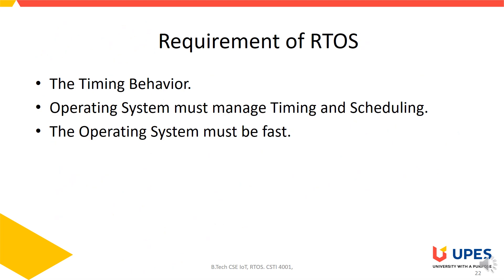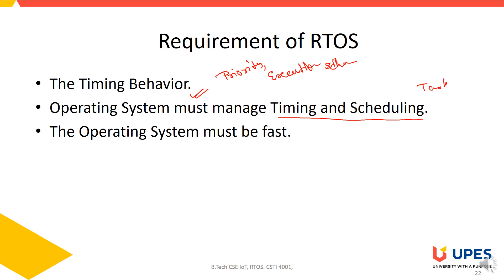Requirements of the real-time operating system include timing behavior — managing the priority of processes as well as the execution schedule. Timing and scheduling of tasks is done by the real-time operating system and it should be fast, meaning it should produce results within the given time frame.